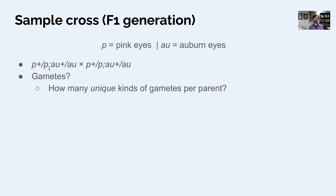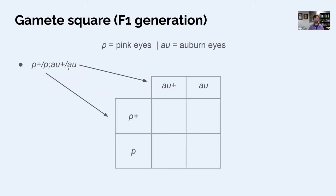So it's every combination of p, two kinds of p, and every combination of those with au, two kinds of au. So here's an example of a gamete square. Not a Punnett square here, but this is the square that would help you determine what are the four kinds of gametes. So p plus with au plus, p plus with au, p with au plus, p with au. Four kinds of gametes, equally likely.